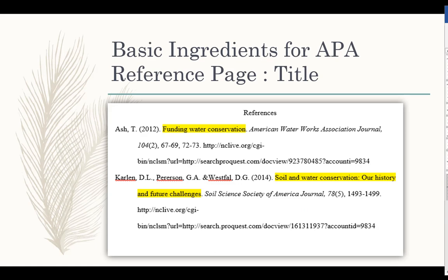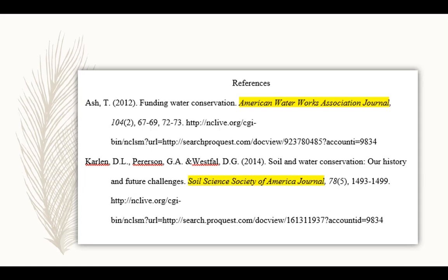The next important component for an APA reference page is the title. The title of the source on the reference page will look different than if you cite it within your paper. Article titles, chapter titles, and titles of web pages will not have their usual quotation marks on the reference page. Titles also have only the first word capitalized, and the first word of any subheading. Any proper nouns will remain capitalized. After you have listed the source title, you might have to list the title of the container that source is found in. If you include titles of books, journals, films, newspapers, websites, or databases on the reference page, then they must be italicized and all major words capitalized.